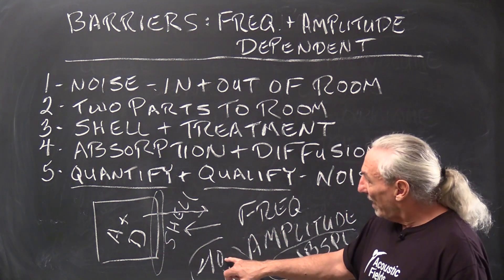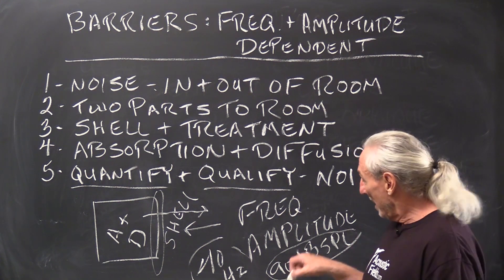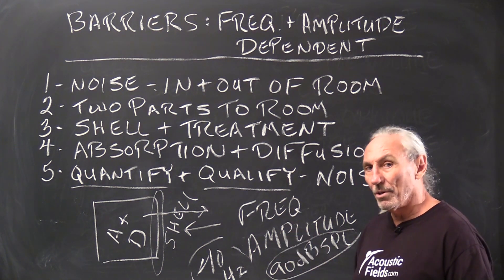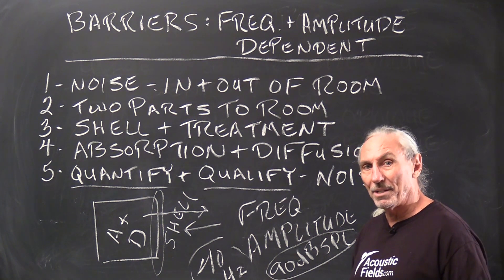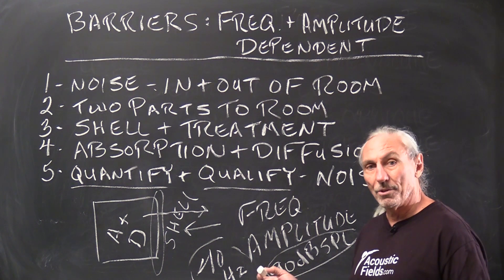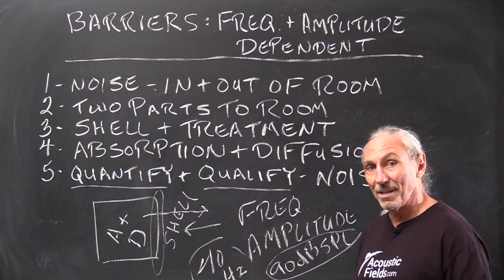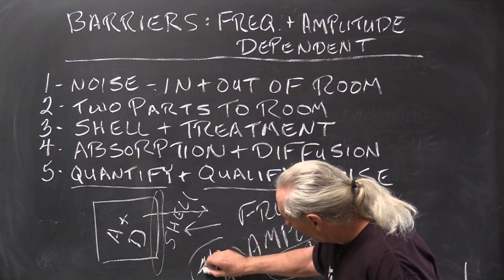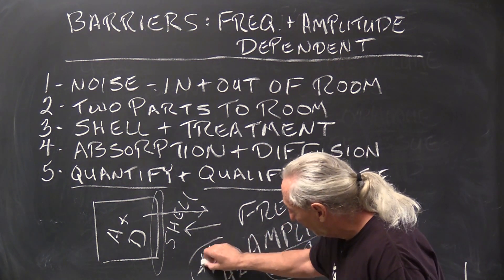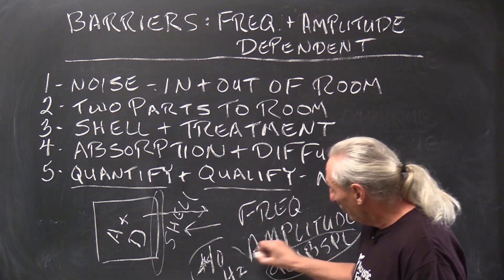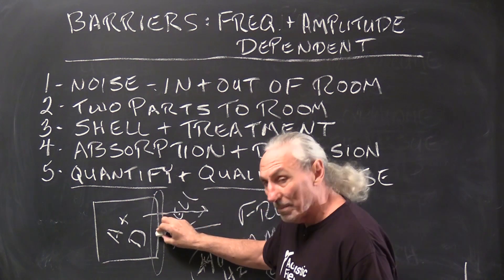So in our situation here, we've got a noise issue from a garbage truck at 40 cycles, and it's 90 dB SPL. Now what do those two numbers mean? They tell us what kind of barrier or shell we have to build. There's a direct correspondence to the frequency and the strength of it. It's just common sense. But that's why we have to quantify and qualify. So we got a 40 cycle problem at 90 dB SPL. Those two numbers tell us how we build our shell.